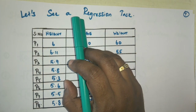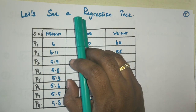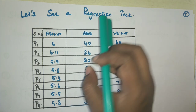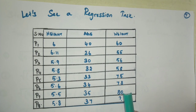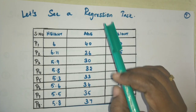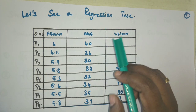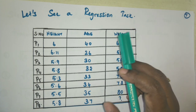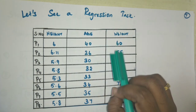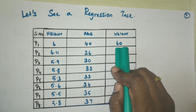We have just seen how to classify a new data point using KNN. Now we shall see a regression task. The algorithm is similar, except that instead of taking the mode — the highest majority class — we take the mean to predict a continuous value. In classification we assign a discrete value such as class 1 or class 2, but in regression we predict continuous values.